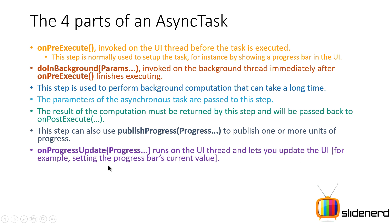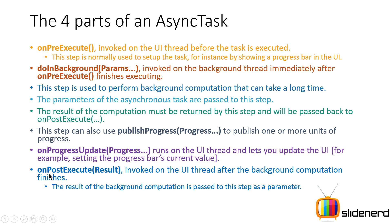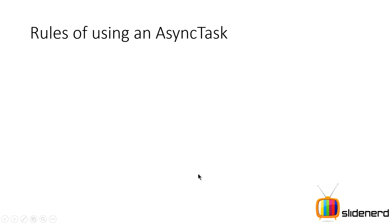publishProgress is called from inside doInBackground and supplies a value like an integer indicating how much of the file was downloaded. This automatically triggers onProgressUpdate on the main thread, letting you update the progress bar. Then onPostExecute, also on the main thread, hides the progress bar and notifies the user — for example, that the download was successful. Only doInBackground runs on the background thread.